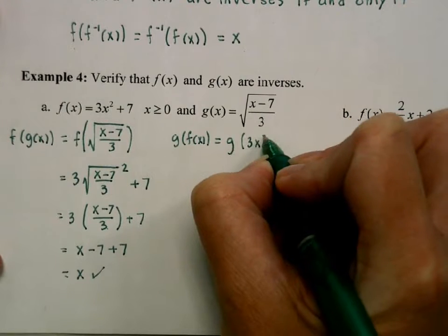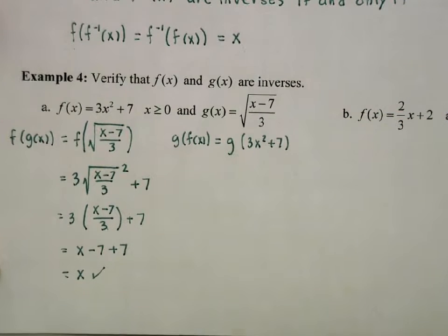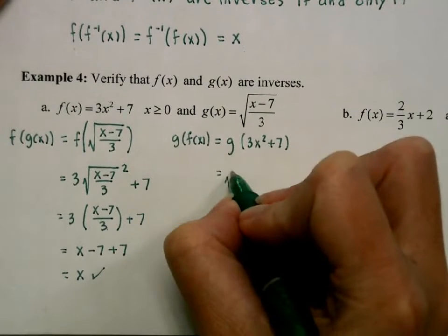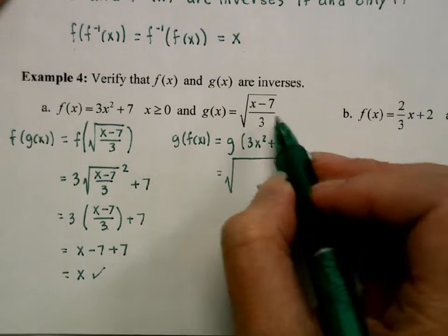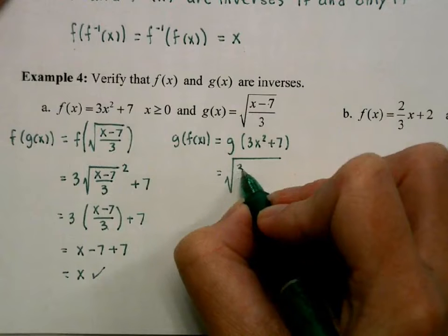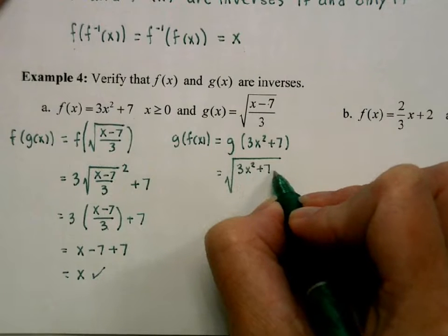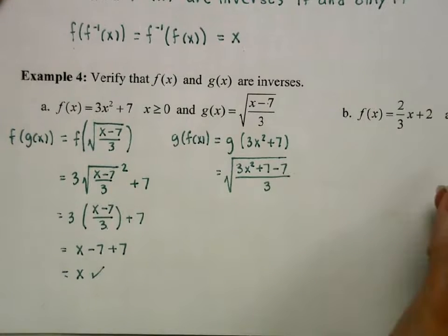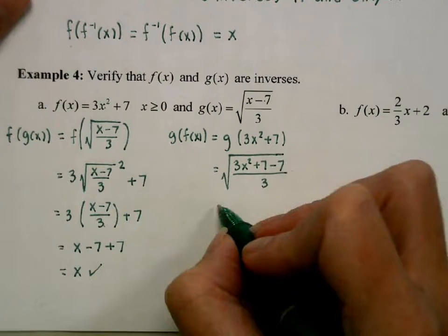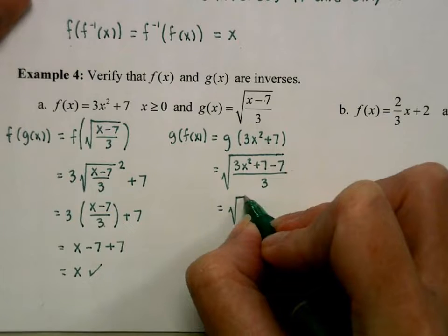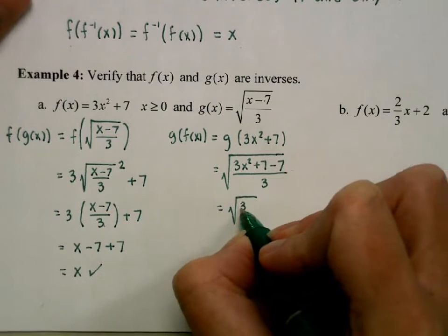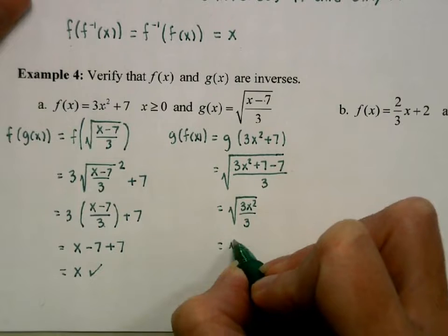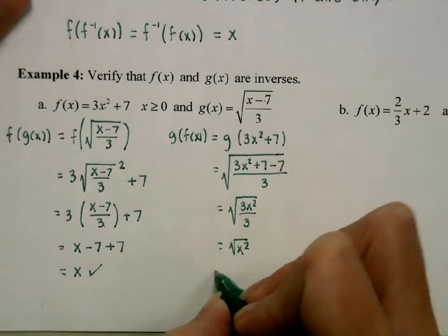Now we are going to take that f(x) and plug it into g(x). So instead of x minus 7 up here, we are going to have (3x² + 7 - 7)/3. And the same process is going to happen. We are going to see stuff just collapse down here. The +7 - 7, the 3's, and then the square root of x². Verified.